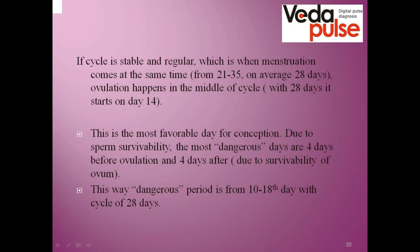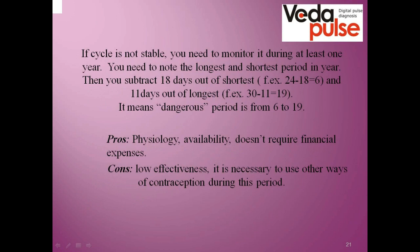The best way to correctly determine your cycle is to measure basal temperature for one year and then make graphs. If the cycle is stable, ovulation happens on the 14th day. But because sperm has a fairly long viability, the fertile period extends to four days, and four more days are added due to the viability of the egg cell. So the period from the 10th to the 18th day of the cycle is considered the dangerous period when you can get pregnant.